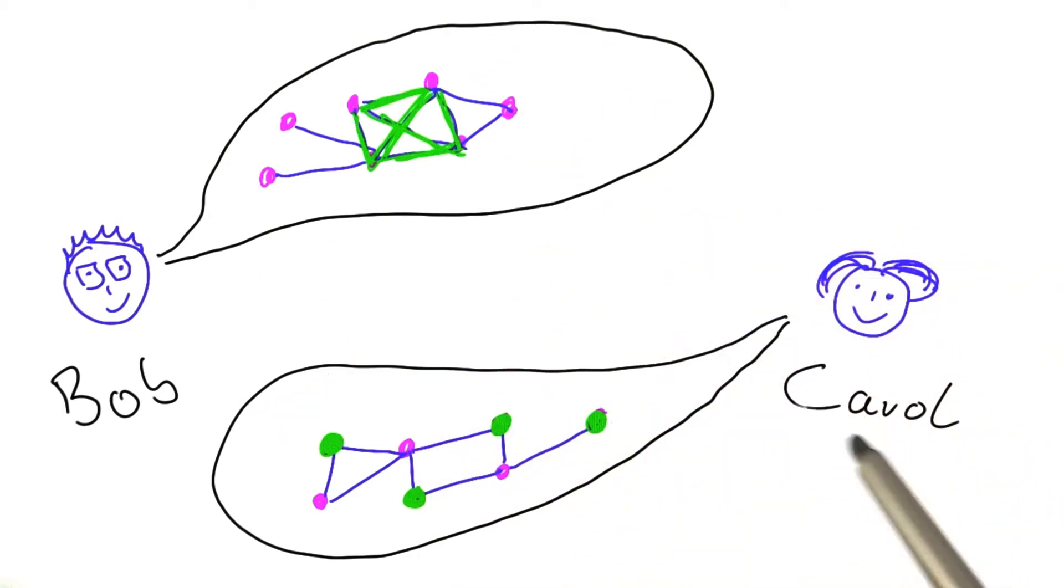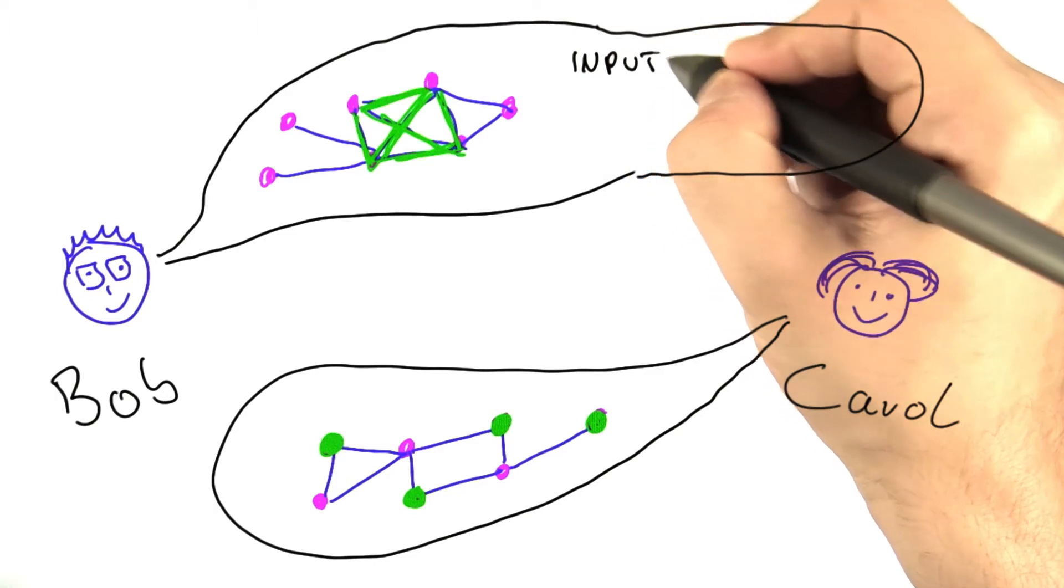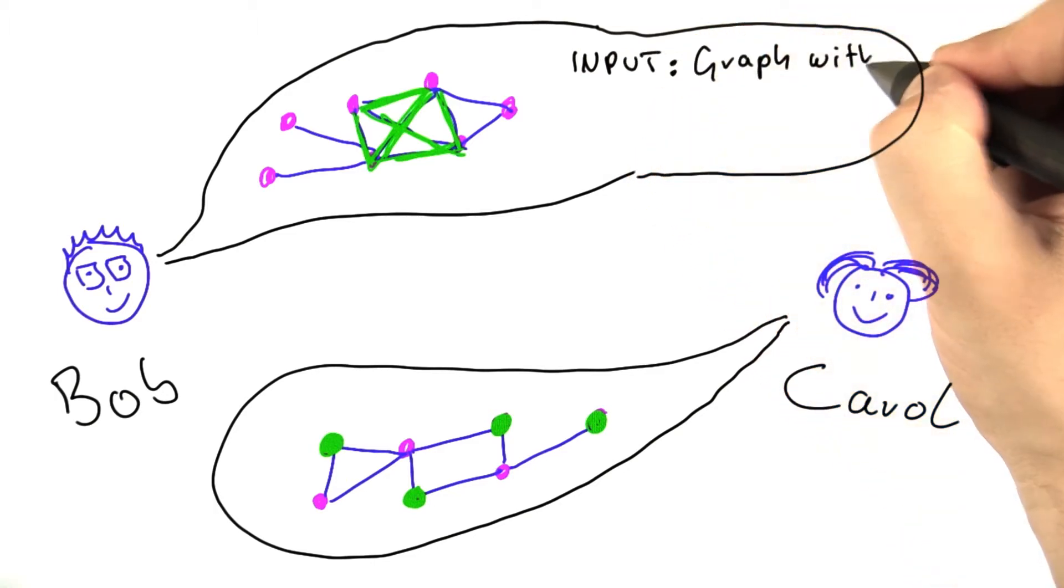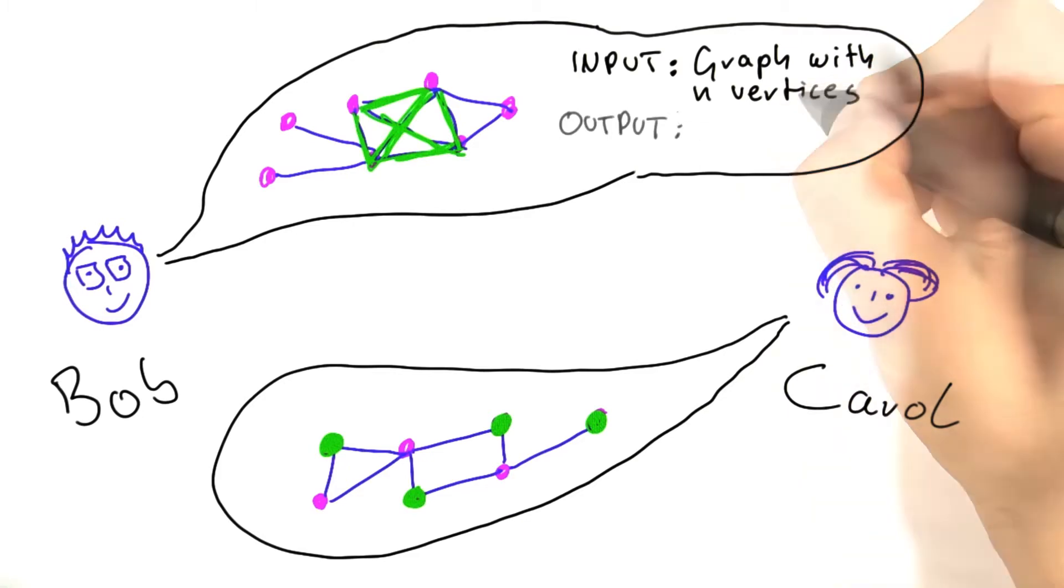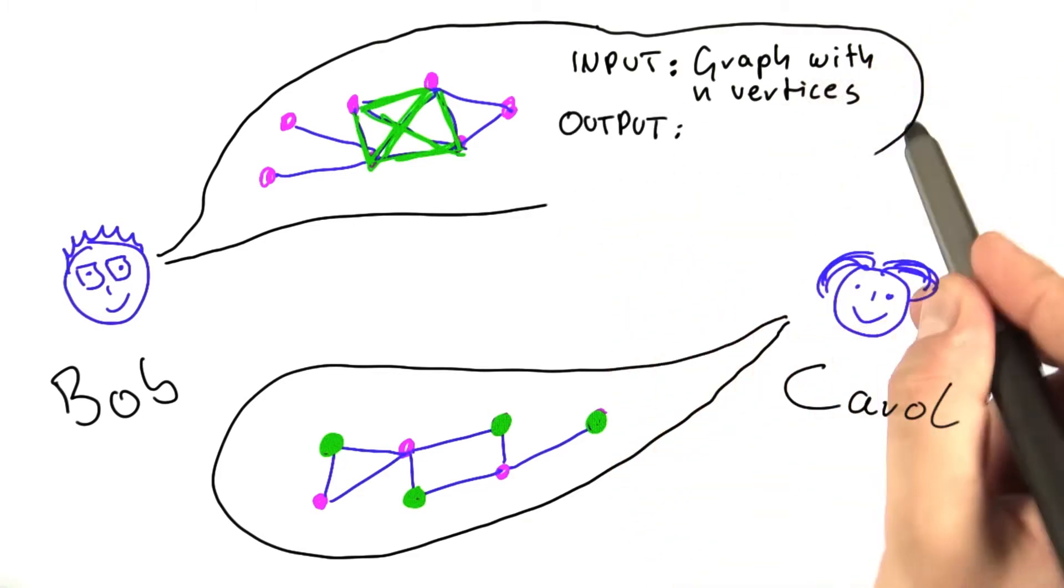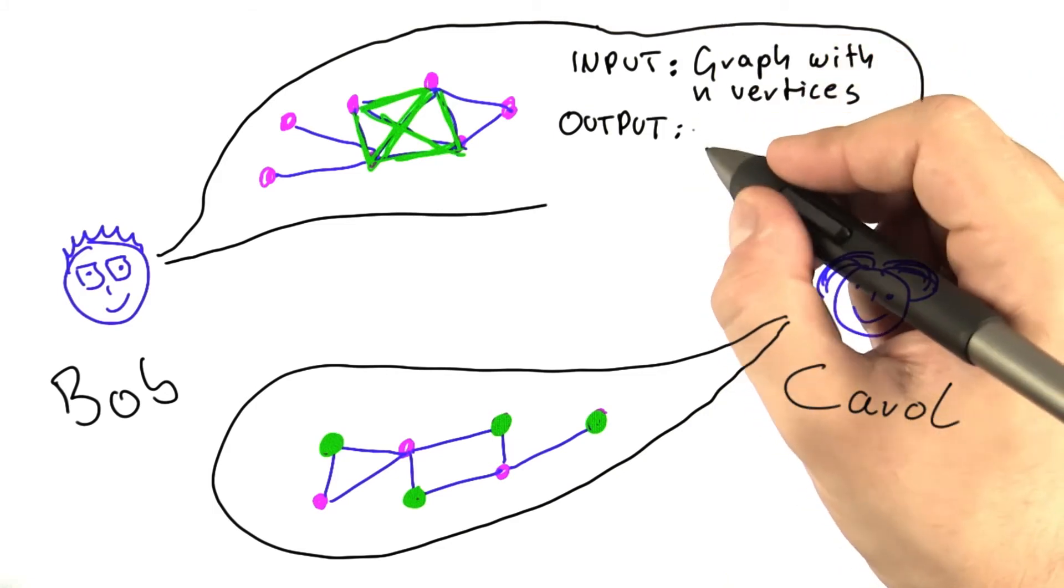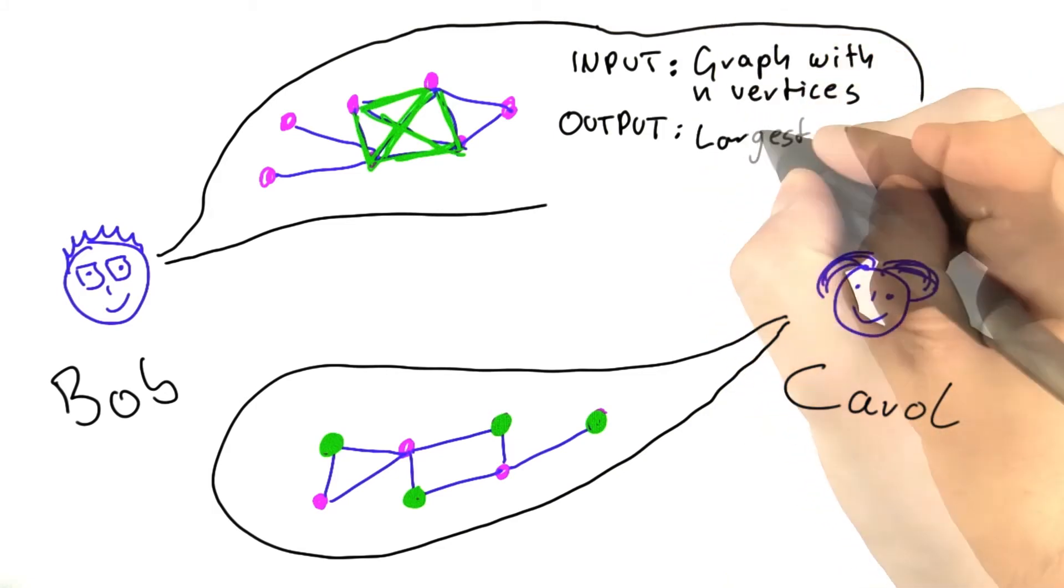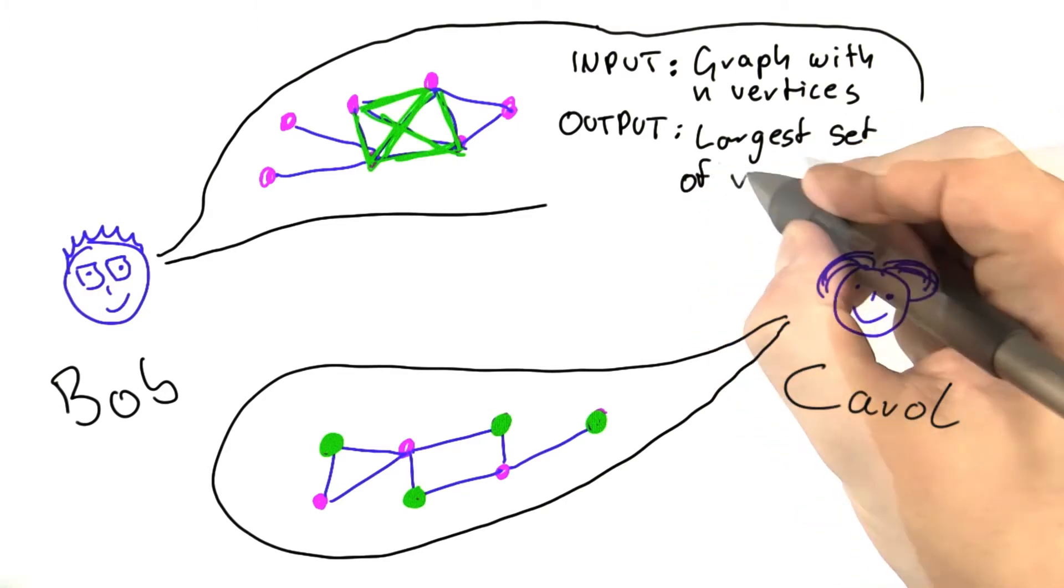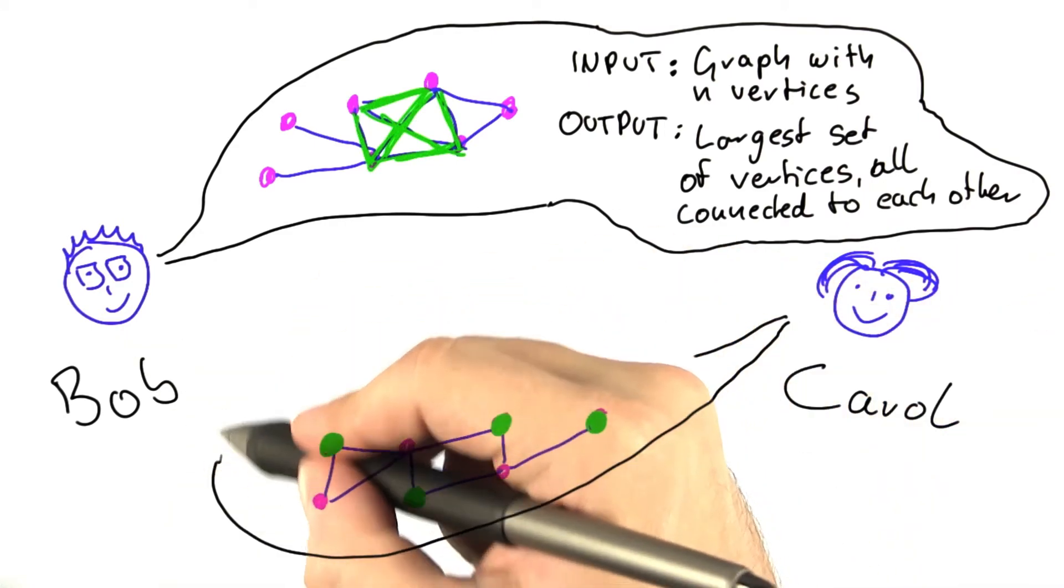And if you use that terminology, you can state the problems that Bob and Carol are working on using a similar language. So Bob's problem is basically taking as input a graph with n vertices and the output that he's looking for. And we have to make this bubble a bit bigger for that. The output he's basically looking for is the largest set of vertices all connected to each other. We'll also make the bubble for Carol a bit bigger to state her problem.